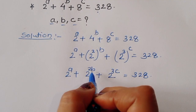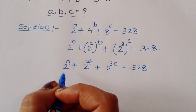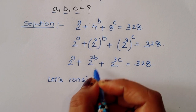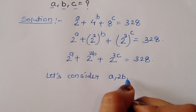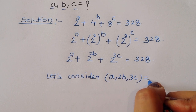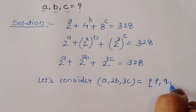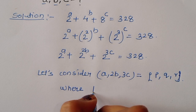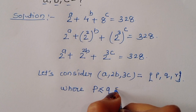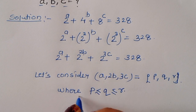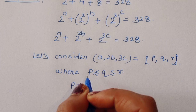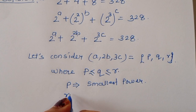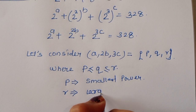Now we have powers A, 2B, and 3C. Let's substitute: let A = P, 2B = Q, and 3C = R. Here P is the smallest power and R is the largest power.